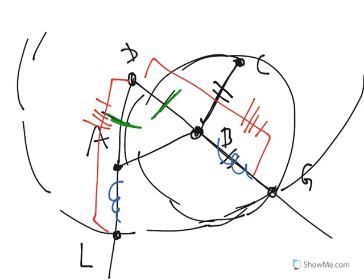BG was congruent to BC — they were part of the same circle. So we have accomplished the goal of creating a line segment that has A as an endpoint and has the same length as the original BC.